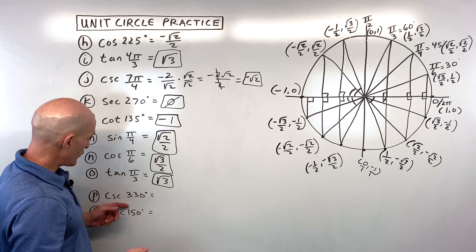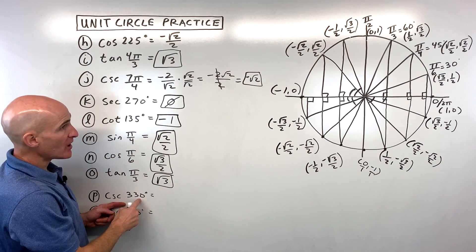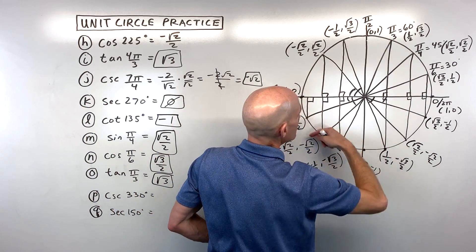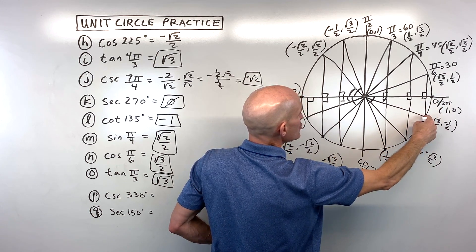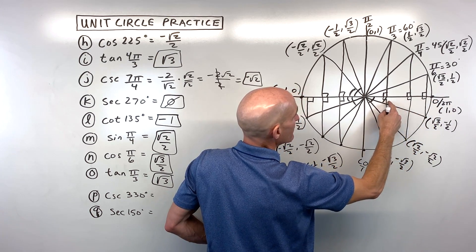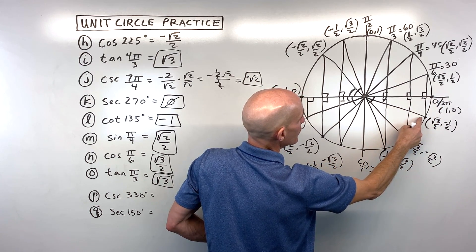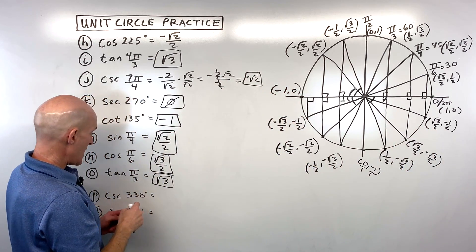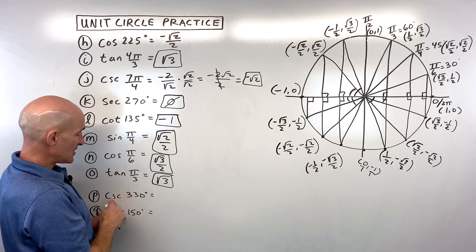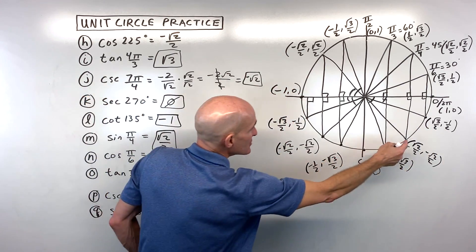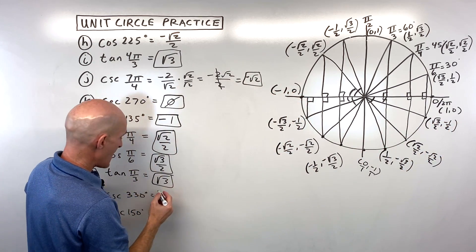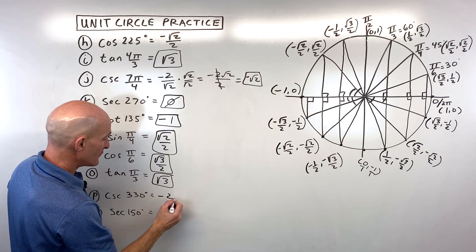Letter P: cosecant of 330 degrees. 330 is almost 360 but 30 degrees short, so the reference angle is 30 degrees. The coordinates are √3/2, negative 1/2. Cosecant is the reciprocal of sine (the y-coordinate): the reciprocal of negative 1/2 is negative 2.